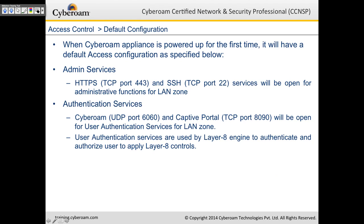When the CyberROM appliance is powered for the first time, it has a default access configuration. For admin services, HTTPS works on default TCP port 443 and SSH on default port 22. For authentication services, it works on UDP port 6060, and the Captive Portal works on TCP port 8090. These authentication services are used by the Layer 8 engine to authenticate and authorize users to apply identity-based firewalling controls.